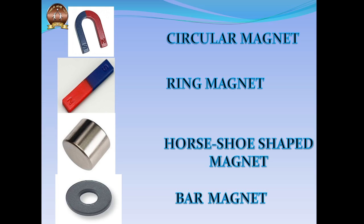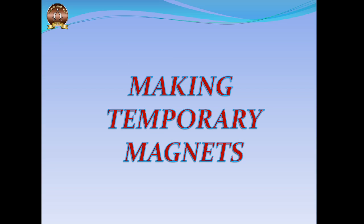Let's take a look at the names of these magnets. The first one is what we call a horseshoe magnet, also called a U-magnet when the poles are farther apart. Then you have the classic bar magnet. This one is what we call a circular magnet, and the last one is a ring magnet, also called a disc magnet.